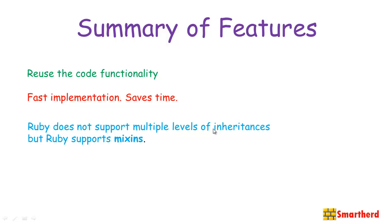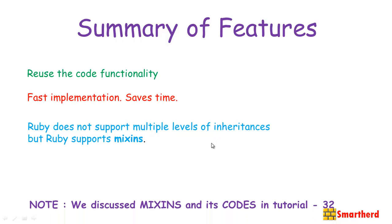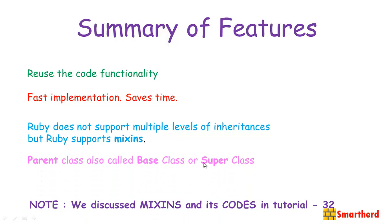The only way to support multiple inheritance in Ruby is through mixins. I discussed mixins and their implementation in tutorial number 32, where we used two modules and inherited their properties into a single class. If you don't remember, please go back and watch tutorial number 32.